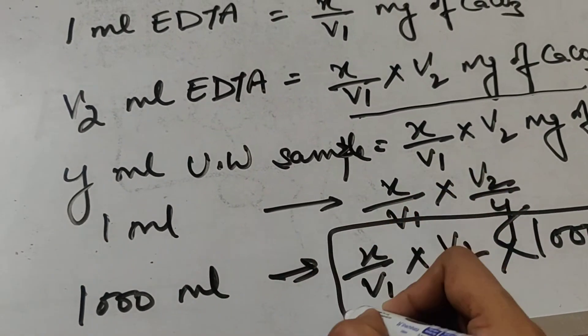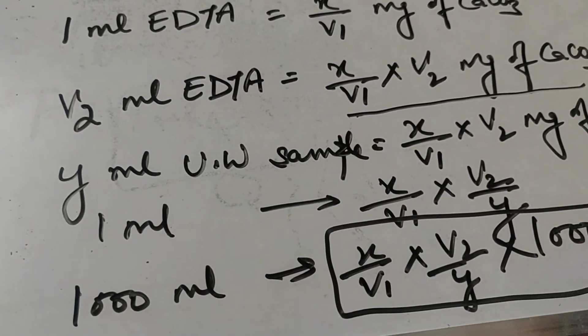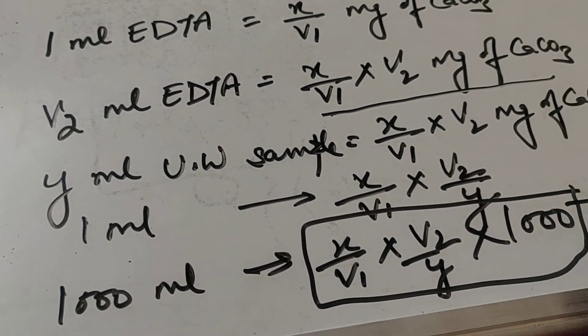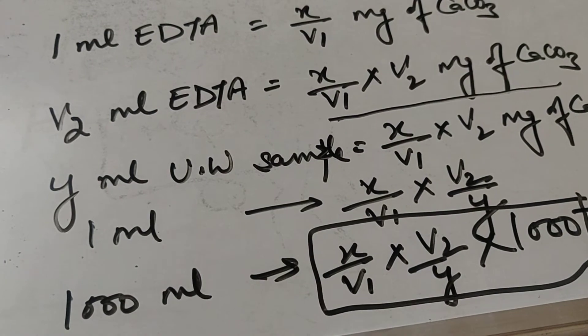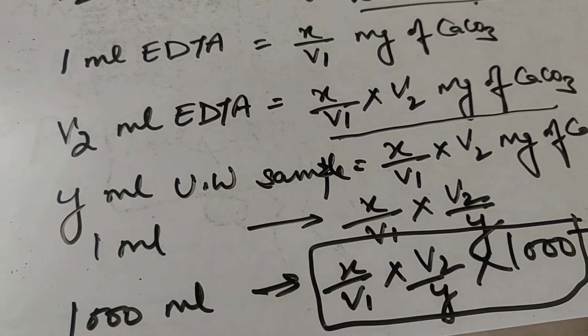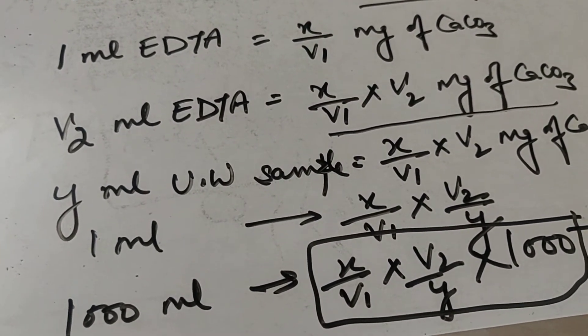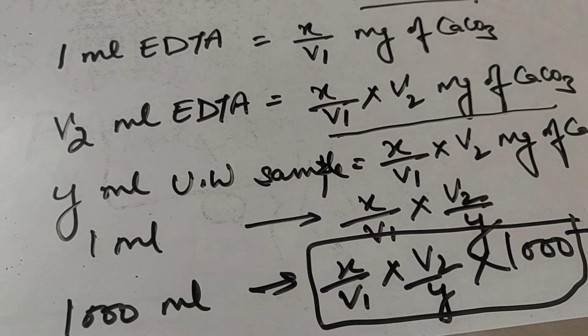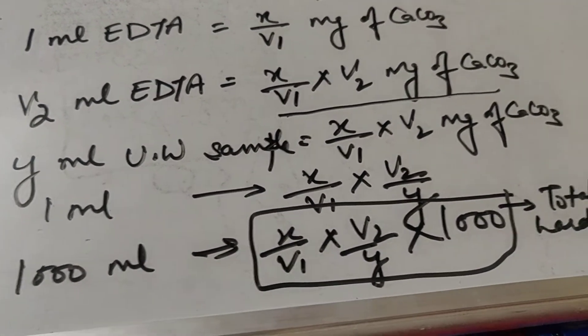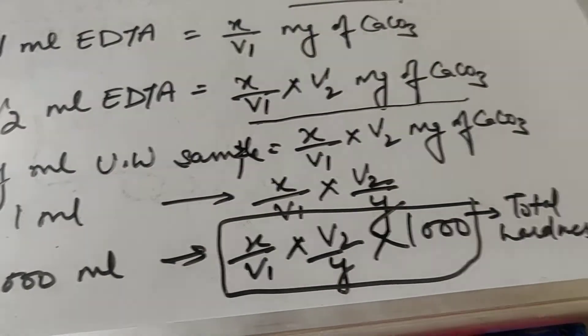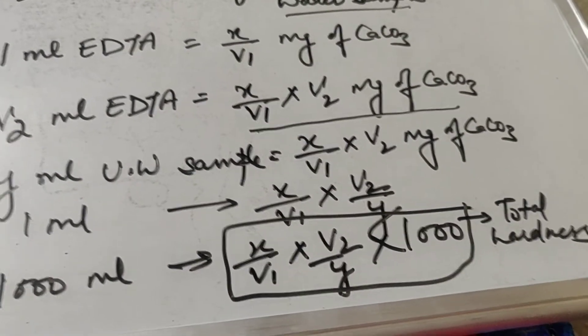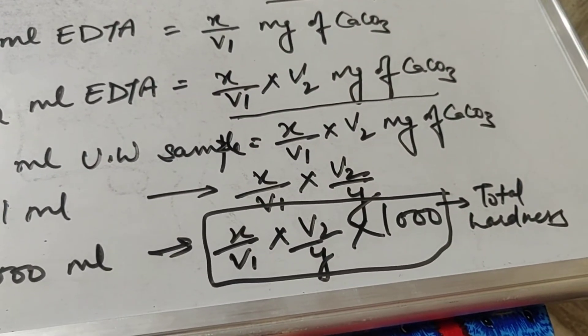For 1000 ml, the total hardness = (X/V1) × (V2/Y) × 1000. This formula gives you the total hardness.